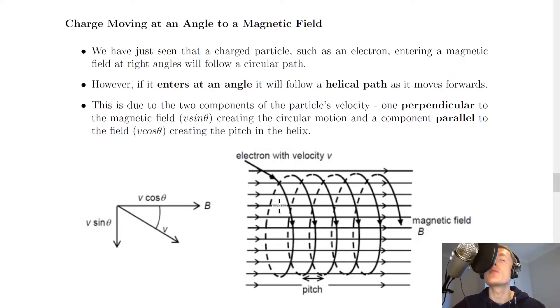Now we've already seen what happens when charge moves perpendicular to a magnetic field, we'll get circular motion of our charge. But we're now going to look at what happens when charge enters a magnetic field at an angle. We have just seen that a charged particle such as an electron entering a magnetic field at right angles will follow a circular path. However, if it enters at an angle, it will follow a helical path as it moves forwards.